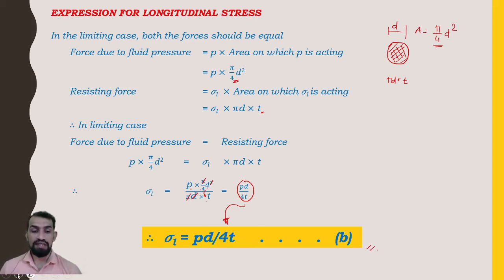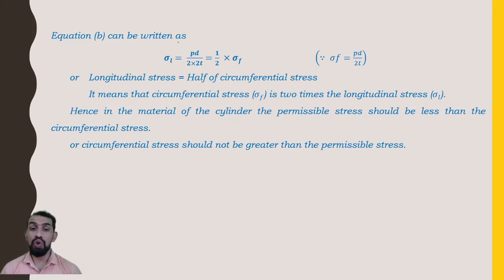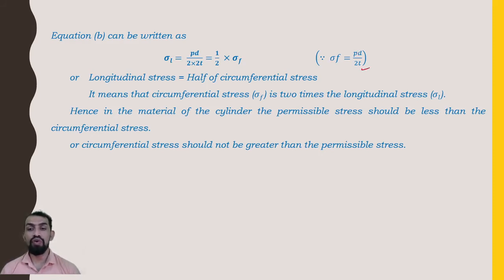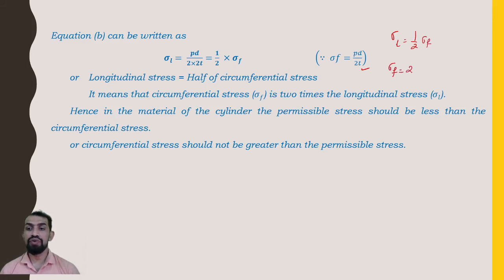The longitudinal stress equation can also be written as sigma l = PD / (2 × 2t), which shows that sigma l equals half of sigma f. Since sigma f = PD/(2t), we have sigma l = sigma f / 2, or equivalently, sigma f = 2 × sigma l. This means the circumferential stress is twice the longitudinal stress. Therefore, the permissible stress in the cylinder material must not exceed the circumferential stress.